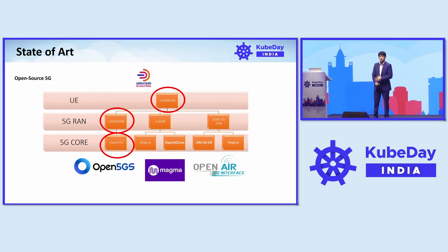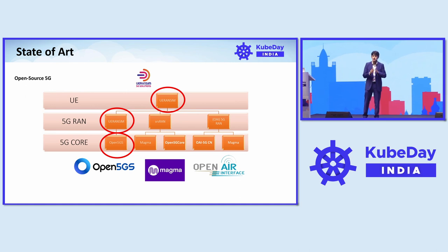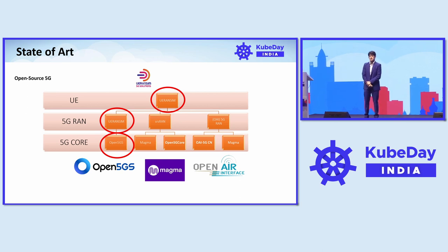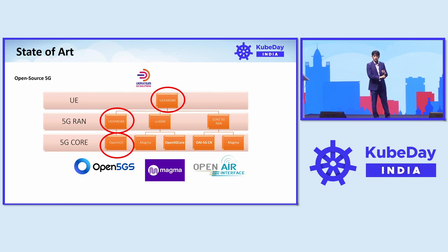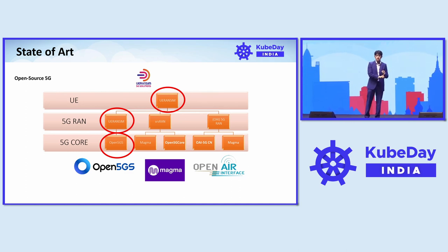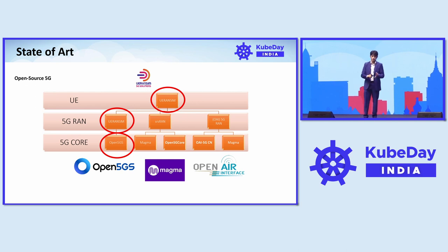We believe in open source. Our demonstration is focused strictly on open source projects. In this presentation, we used UERANSIM and Open5GS for two main reasons: first, the versions are really stable and we have deployed them in AWS environments; and second, there is a huge community behind them, which means help, support, and efficiency.